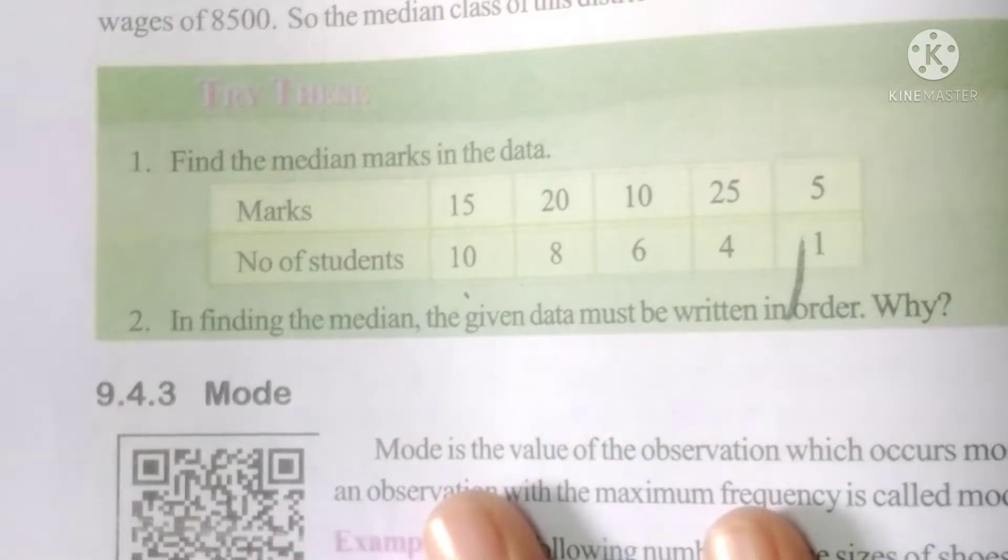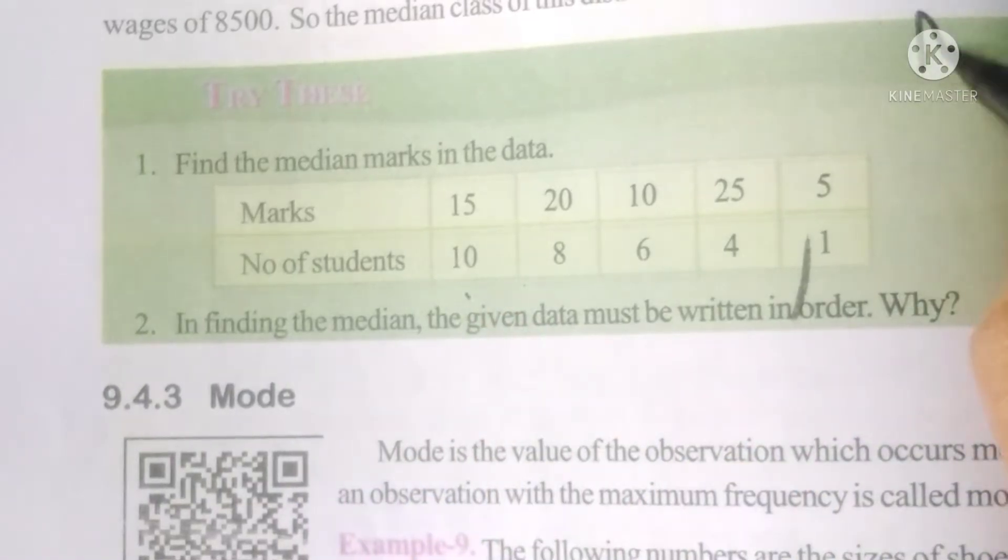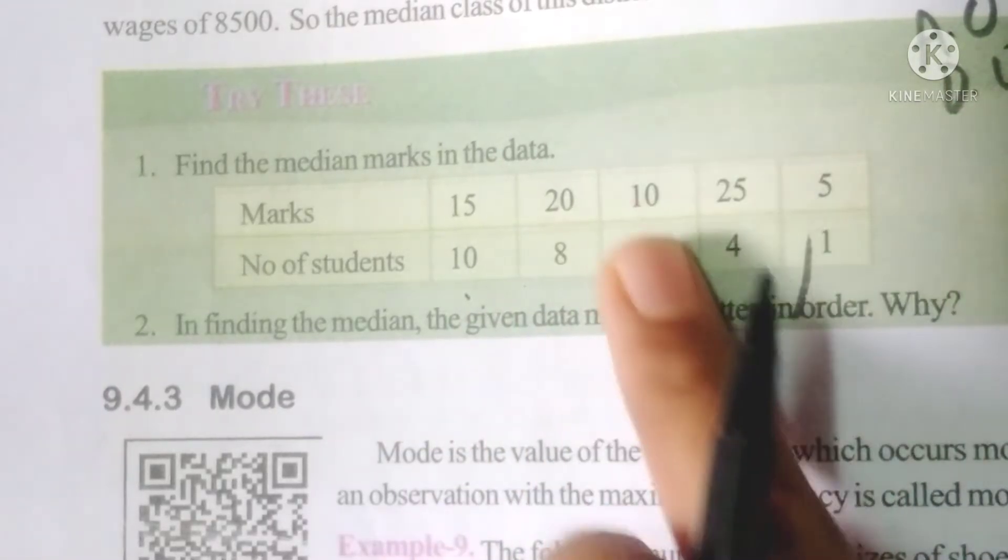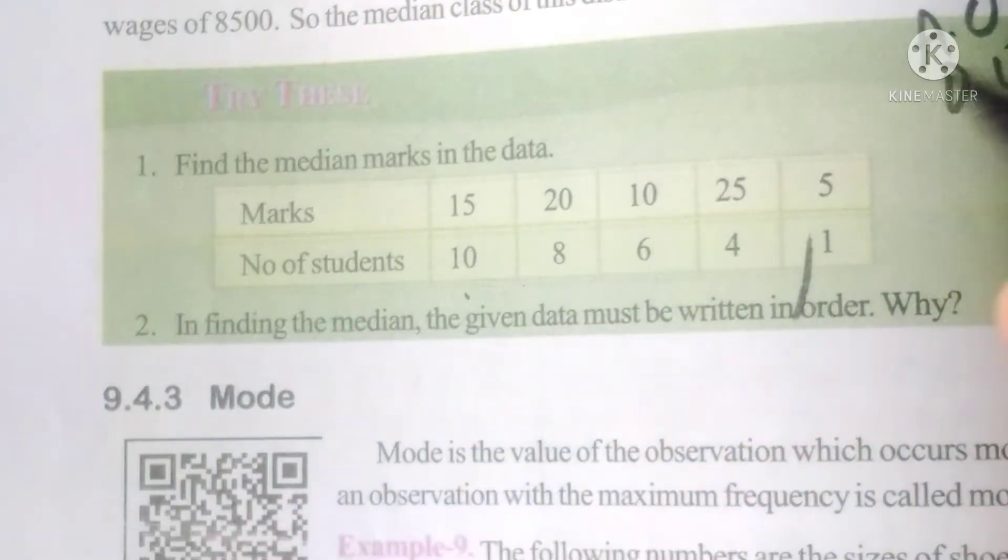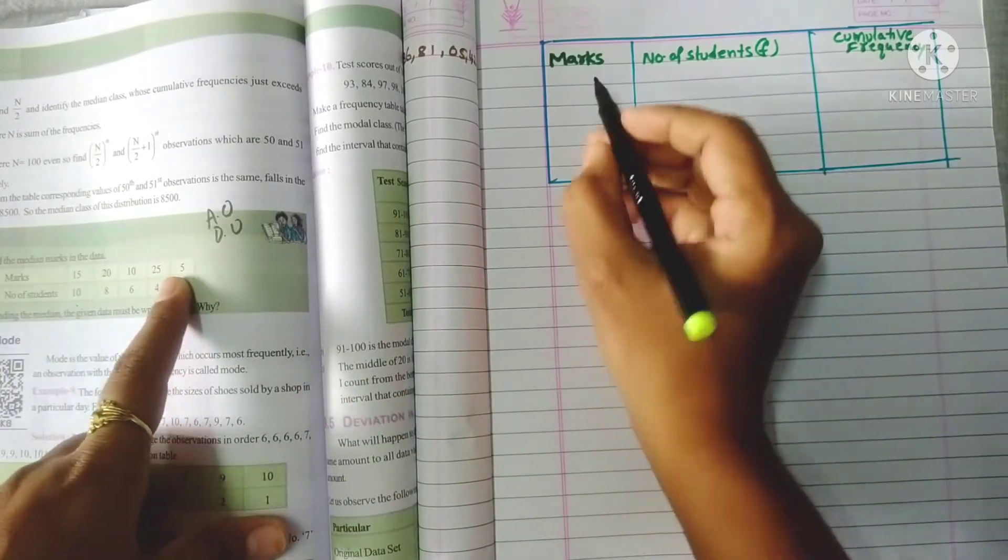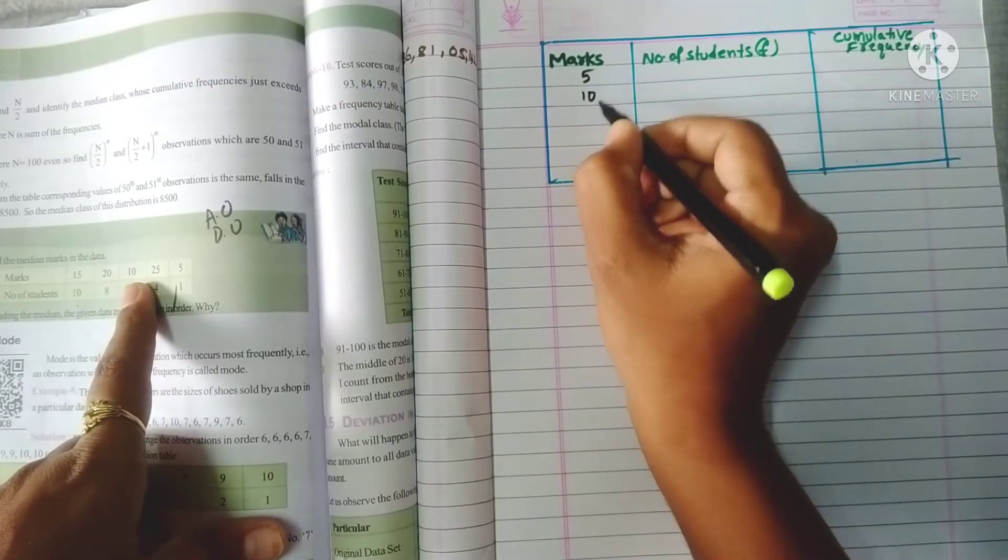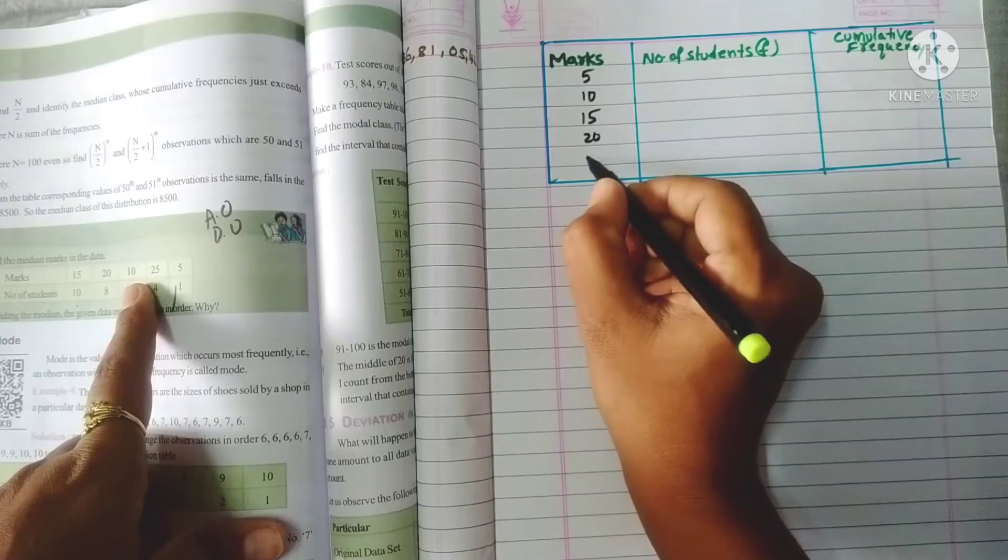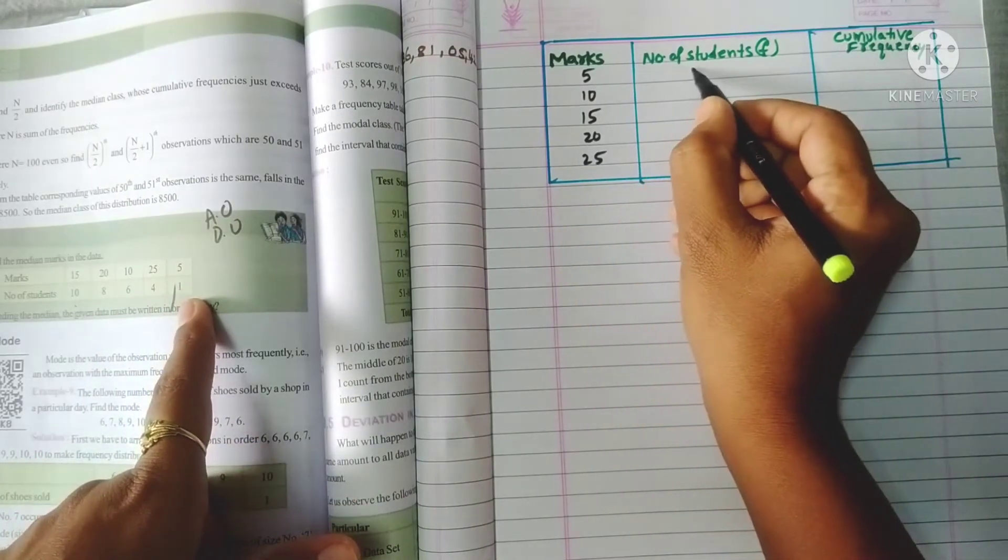You know the definition of median, right? Median is the middle value after arranging in ascending order or descending order. So this data also we have to arrange in order, either in ascending or descending. After arranging in order: marks first 5, then 10, 15, 20, and 25.